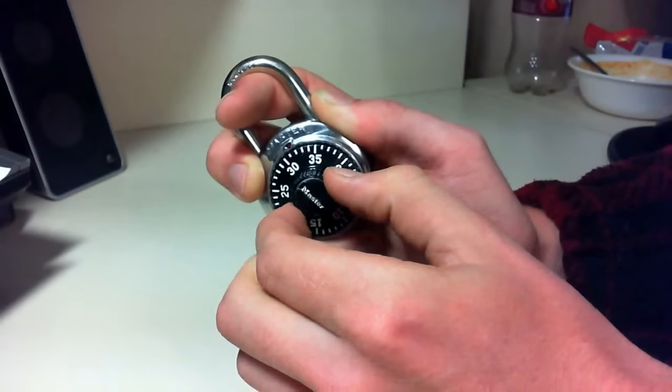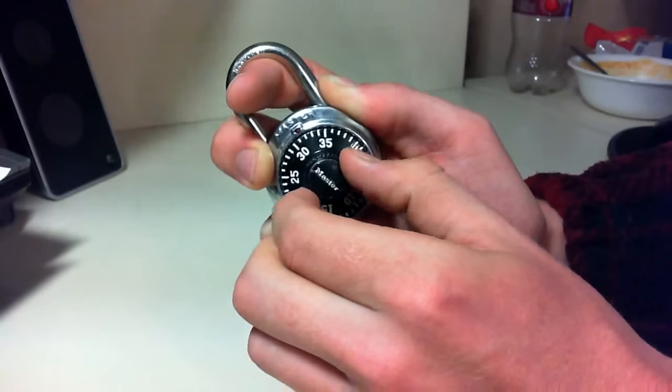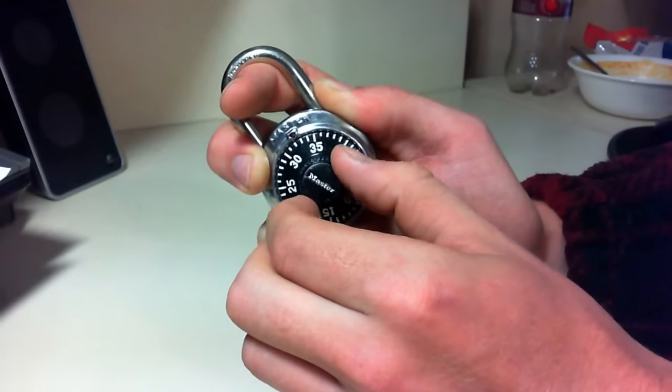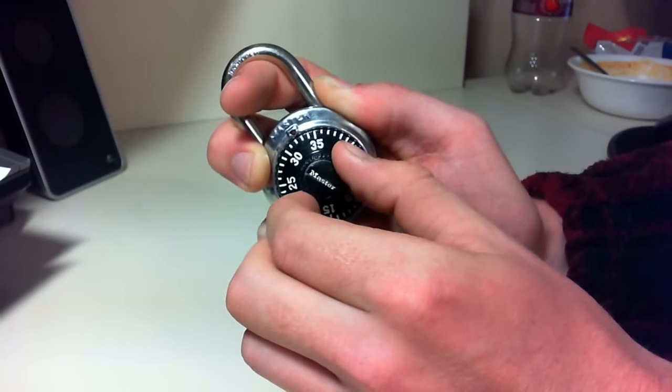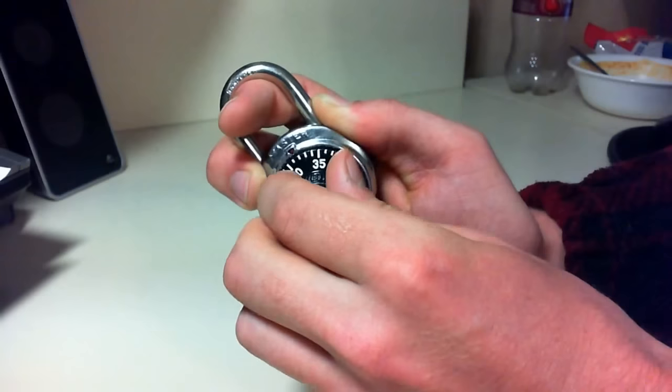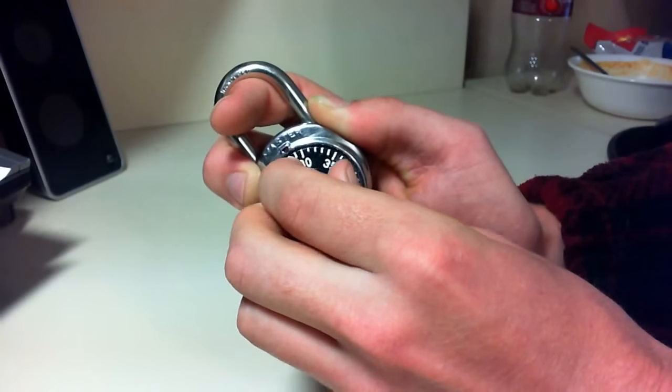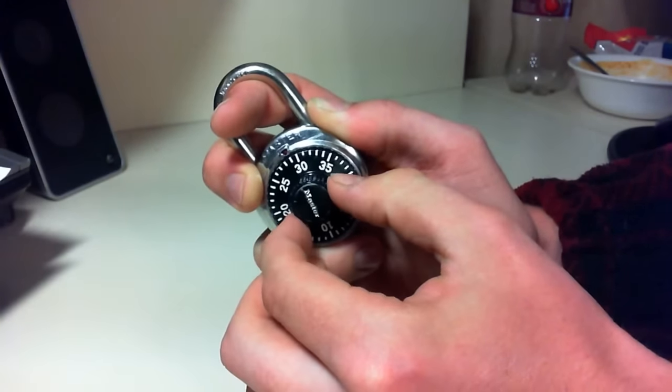So you write 35 down, release a little bit of pressure, and go to the next number that it locks on. It looks like this locked on in between two again, so we're going to write this one down, this is 32, and then you're going to release a little bit of pressure, and try it again. You're going to do this all the way around.